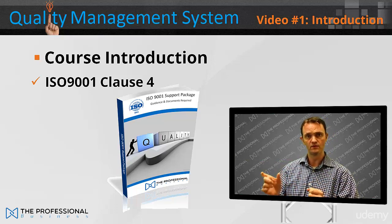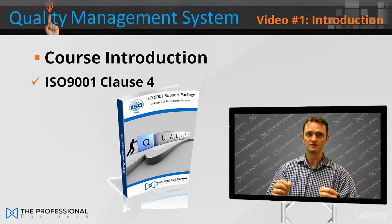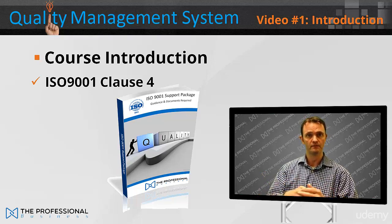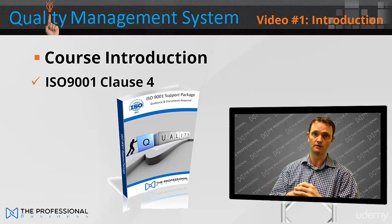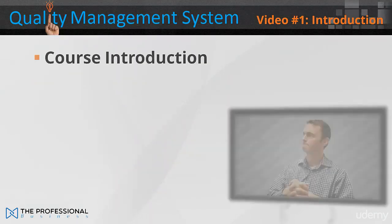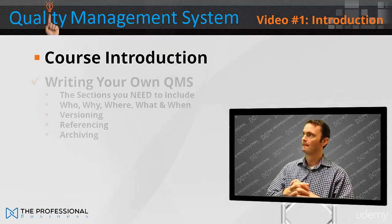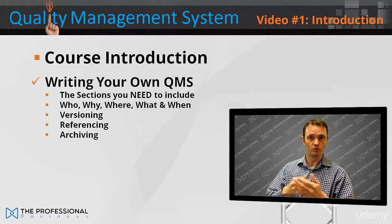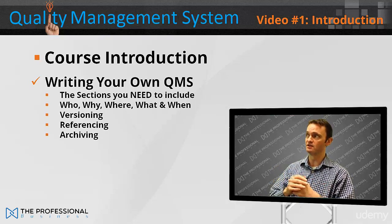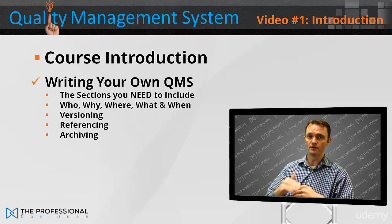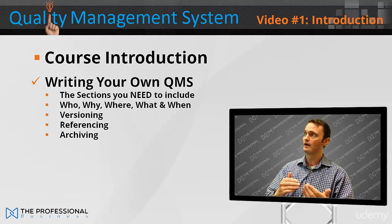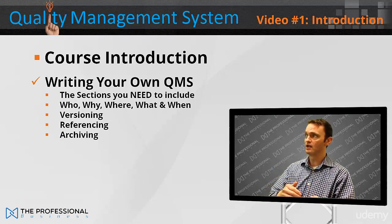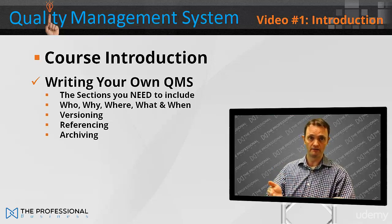We'll be looking at clause 4, which specifically deals with creating a quality management system and what really needs to be included. Writing your own QMS, or quality management system — the sections you need to include: who, why, where, what, and when. Versioning, referencing, and archiving.